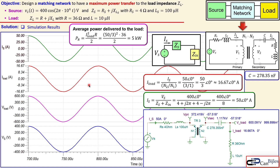This completes the example of maximum power transfer from source to load using a matching network — a transformer with a series capacitor added to the load. Don't forget to like and share these videos so we can reach more people on these interesting topics. Thanks for your cooperation and see you next time.